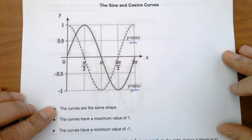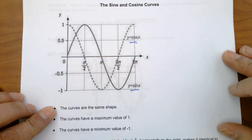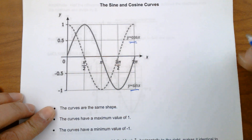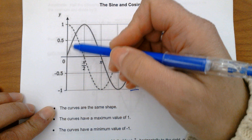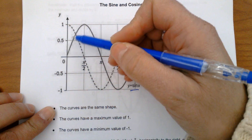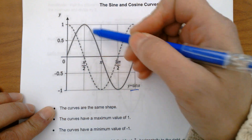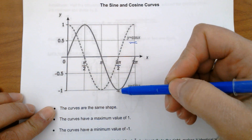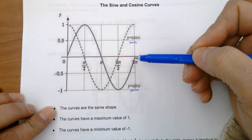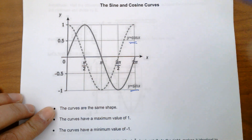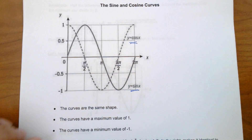The first feature is that they have the same shape. They are both curves — they have a maximum, they go down to the minimum, and then they come back to zero.